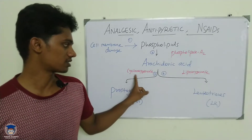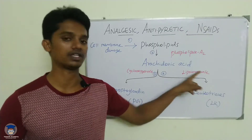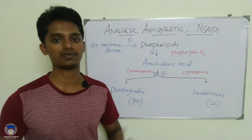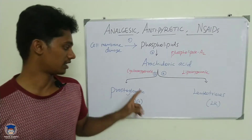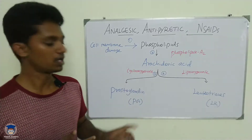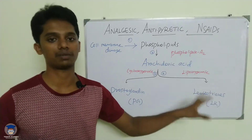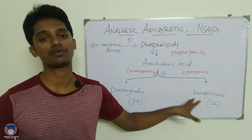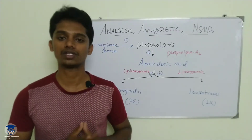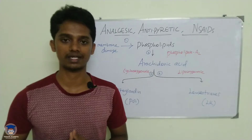The cyclooxygenase enzyme is called COX. There is another pathway involving an enzyme called lipoxygenase, or LOX, which produces leukotrienes. If we look at other enzymes in this pathway, they will also affect prostaglandin production. Now we will look at the classification of NSAIDs.